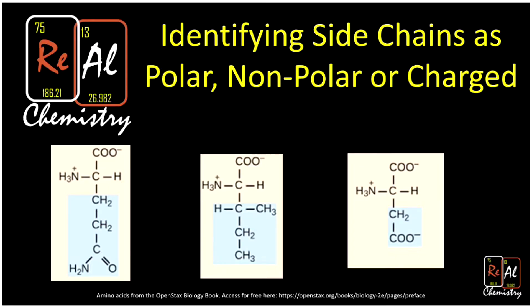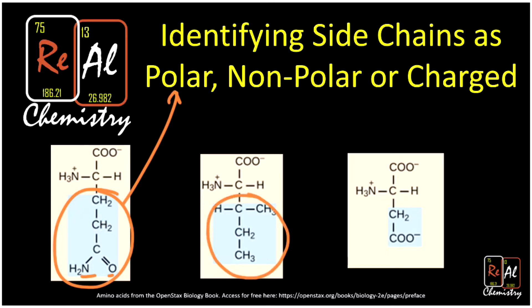First up, recall that the side chains are the part of an amino acid that varies, and they're highlighted in orange here. This very first side chain contains nitrogen and oxygen — things that are going to generally make an organic molecule polar — and that in fact makes our side chain polar. Next up, we have an amino acid with only carbon and hydrogen in its side chain, and that's going to make it nonpolar.